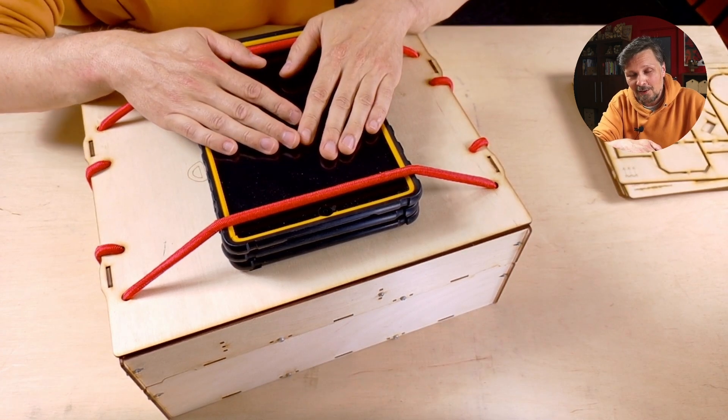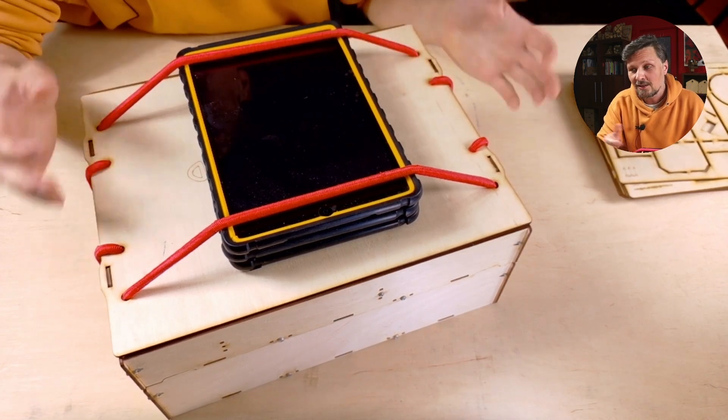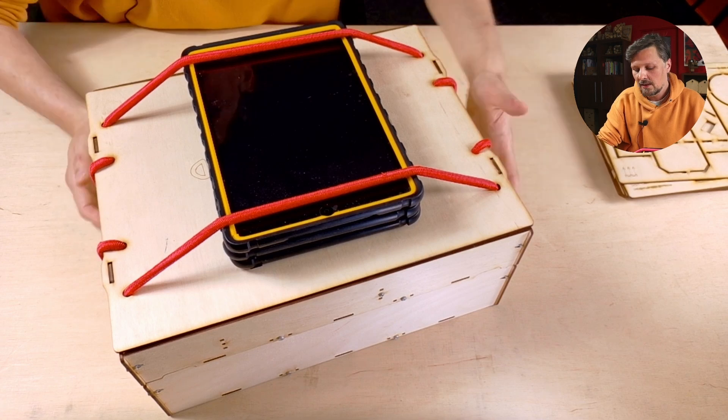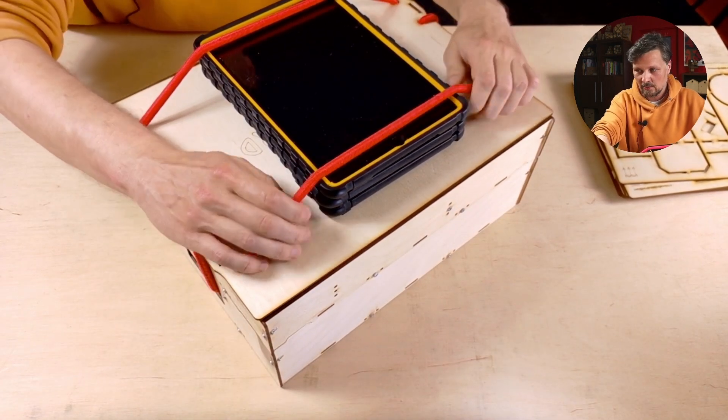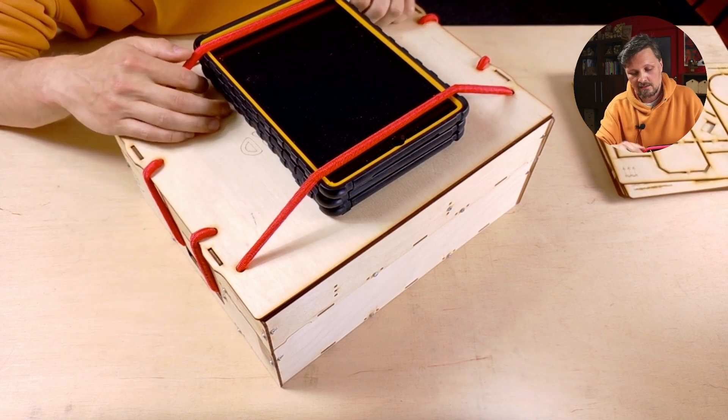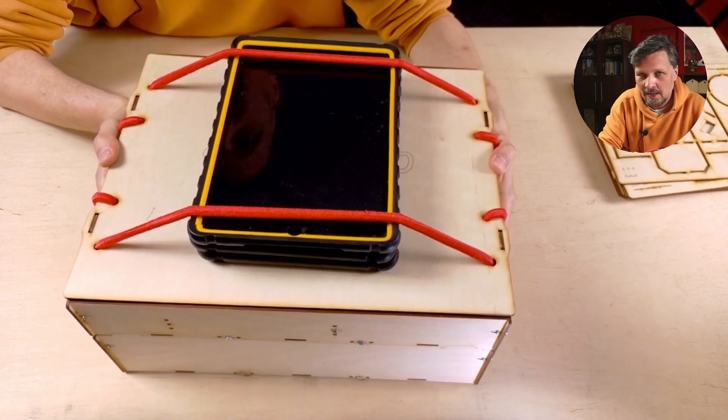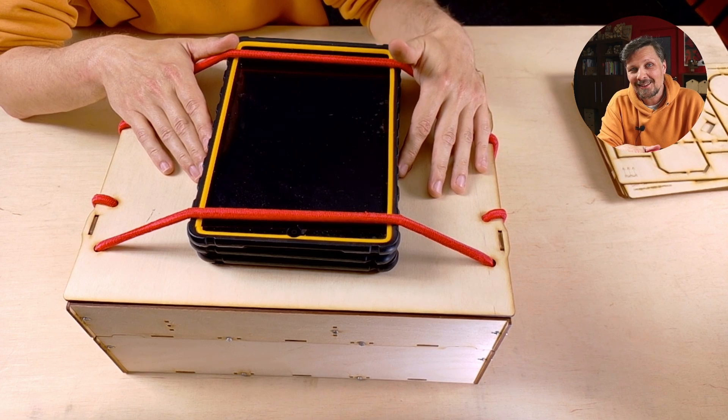If you have access to a laser cutting machine in your school or some kind of laser cutting service, then you can cut it from three millimeter plywood. You only need nuts and bolts and this rubber band, which you can get in any construction store, to make it work and store all of your equipment in this one neat package. So I hope you like it. Cheers!